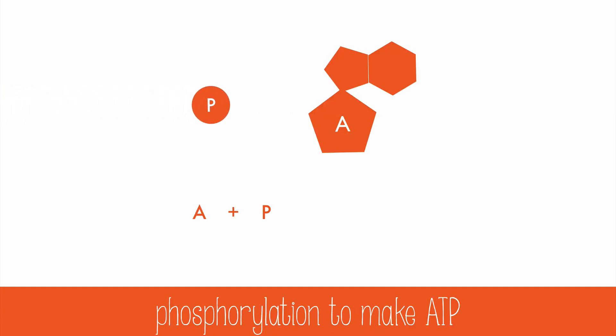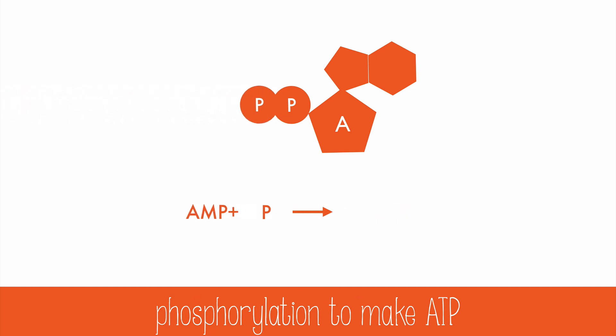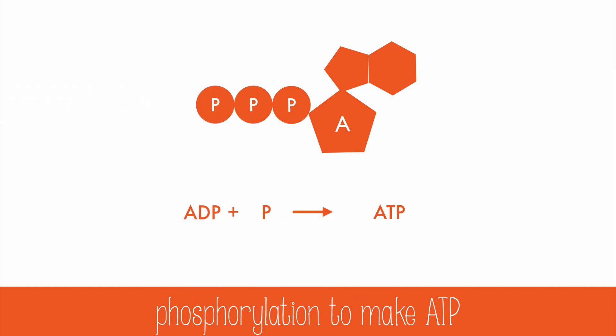Adenosine becomes adenosine monophosphate, then adenosine diphosphate, and eventually adenosine triphosphate with the addition of the third phosphate group. The addition of each phosphate actually makes the molecule more unstable. It's this instability that makes it a great energy molecule — it's ready to break off the third phosphate and transfer that energy to another molecule.